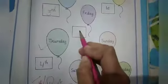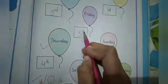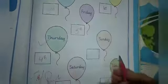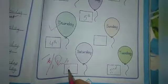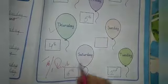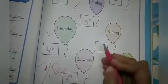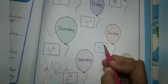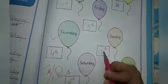Next is Friday. Friday is the 5th day of the week. Then Saturday is the 6th day of the week. And Sunday is the 7th and also the last day of the week.